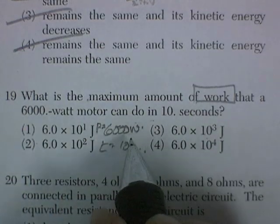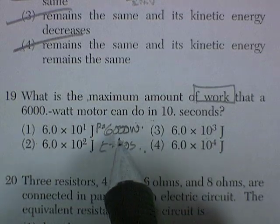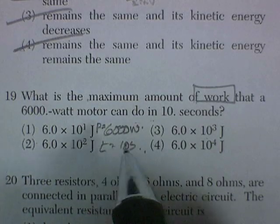6,000 watts. Light bulb measured in watts. The power is measured in watts. So we've got power and time. We're looking for work.